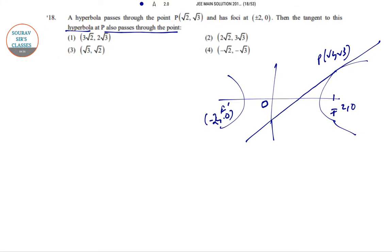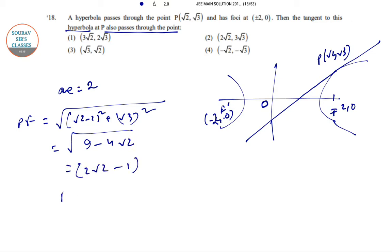In this case, ae equal to 2. This is the foci at part. pf equals square root of 9 minus 4 root 2, that is 2 root 2 minus 1. And pf dash will be root of 2 plus 2 whole square plus 3, that is 9 plus 4 root 2, that is 2 root 2 plus 1.